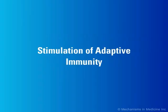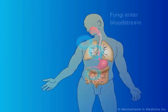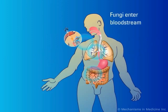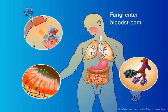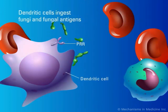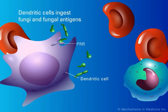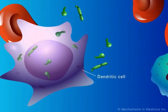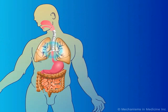Stimulation of Adaptive Immunity. Fungi breach anatomical barriers to gain access to internal structures. Dendritic cells recognize and bind to fungi and fungal particles by pattern recognition receptors. Fungi and fungal particles are ingested by dendritic cells.